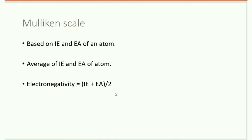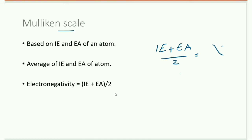Another important scale is the Mulliken scale. The Mulliken scale is based on ionization enthalpy and electron affinity. The average of ionization enthalpy (IE) and electron affinity (Eₐ) gives the electronegativity: χ = (IE + Eₐ) / 2.